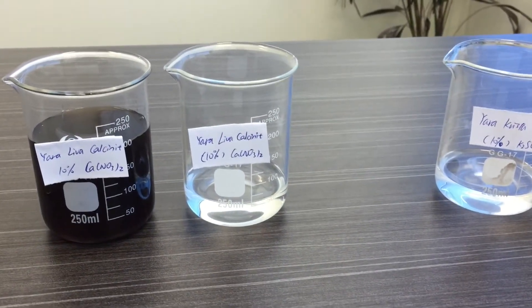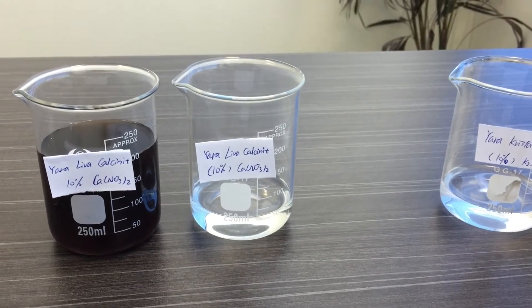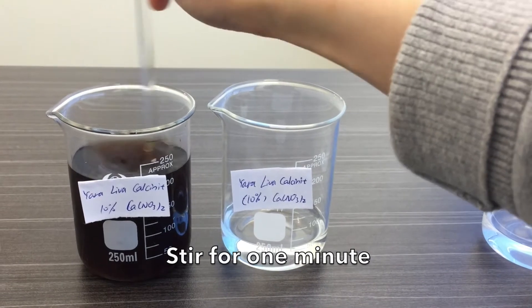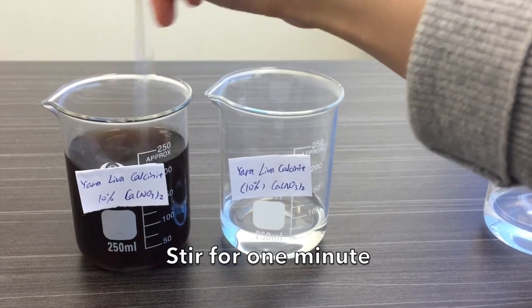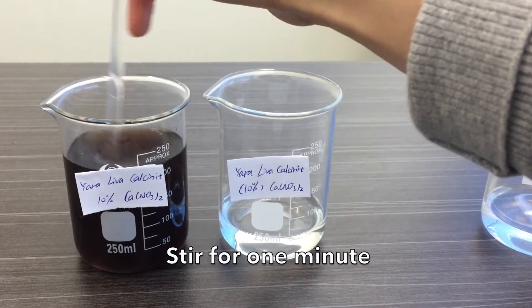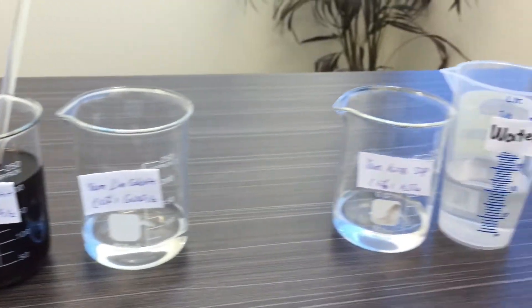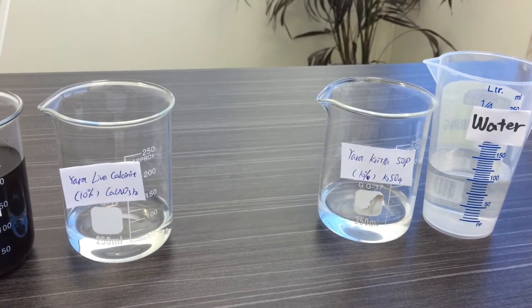By this time all the calcium ions should be chelated by Sea Green Extract, so let's give it a really good stir. I'm then going to leave this for a while and mix these two solutions together.